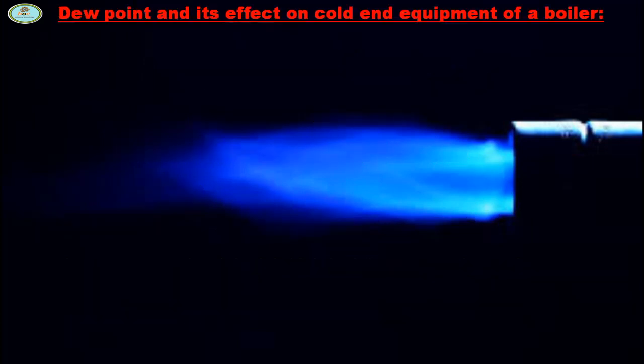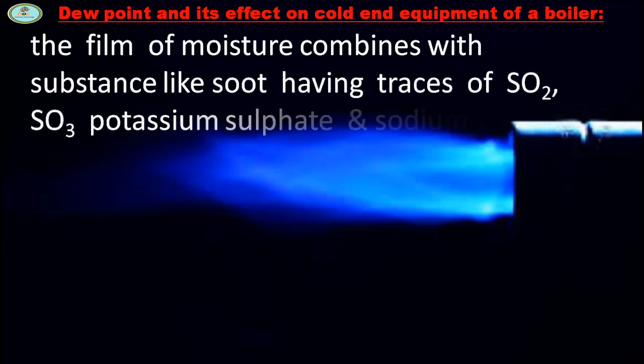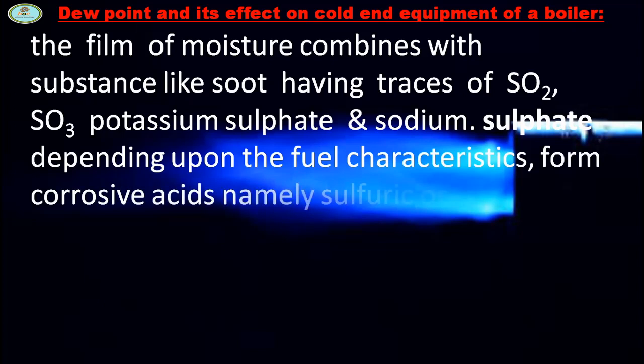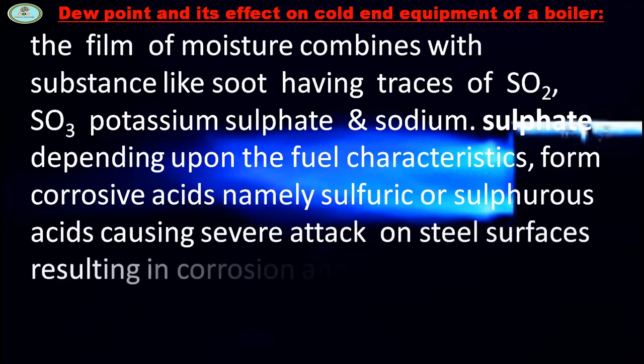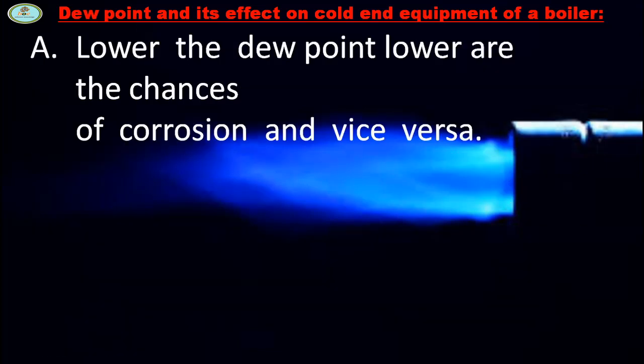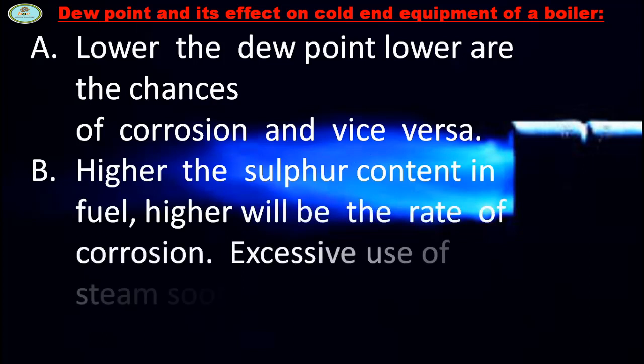Dew point and its effect on cold end equipment of a boiler: The film of moisture combined with substances like salt having traces of SO2, SO3, potassium sulfate, and sodium sulfate, depending upon the fuel characteristics, form corrosive acids namely sulfuric or sulfurous acid, causing surge attack on steel surface resulting in corrosion and wasting. Such corrosion is termed as low temperature corrosion. Lower the dew point, lower are the chances of corrosion and vice versa. Higher the sulfur content in fuel, higher will be the rate of corrosion. Excessive use of steam soot blowers will augment corrosion.